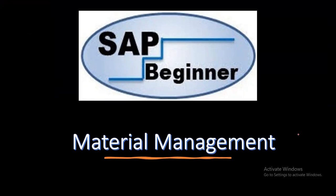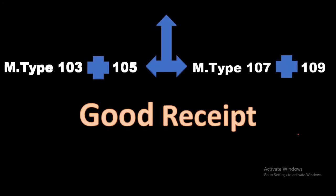Today we will discuss the different movement types used during goods receipt. We all know movement type 101 is used for goods receipt with reference to a purchase order, but there are different movement types which can be used as per client requirement — like 103, 105, 107, and 109. The combination of 103 plus 105 equals 101, and similarly 107 plus 109 equals 101.